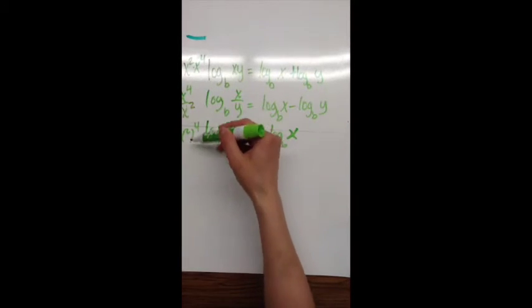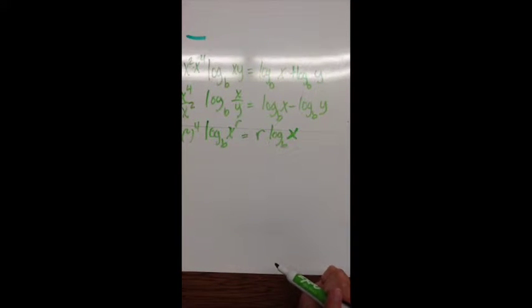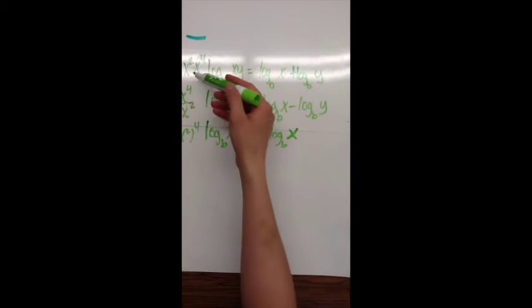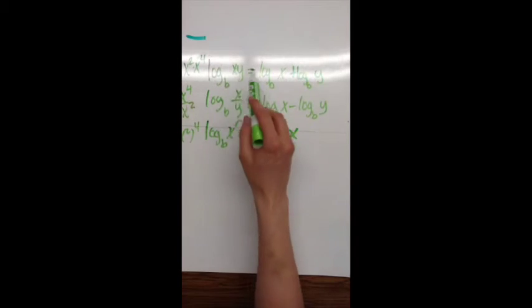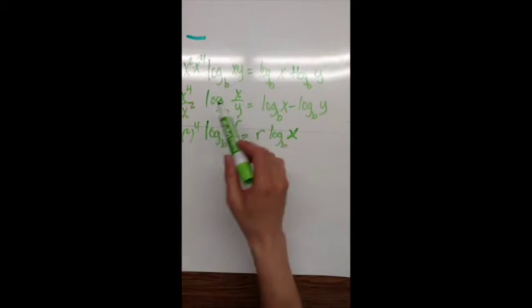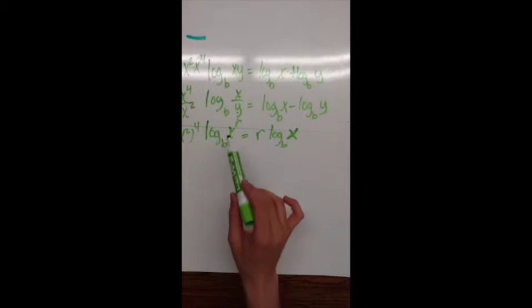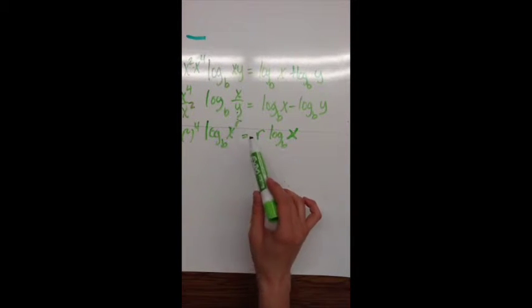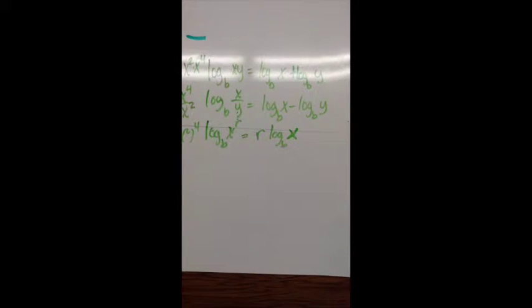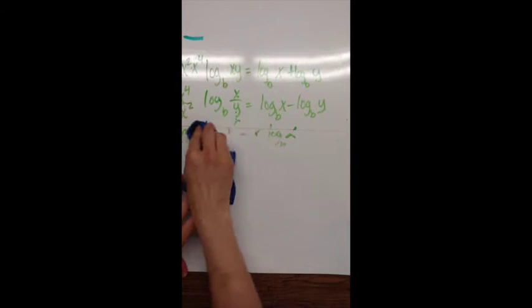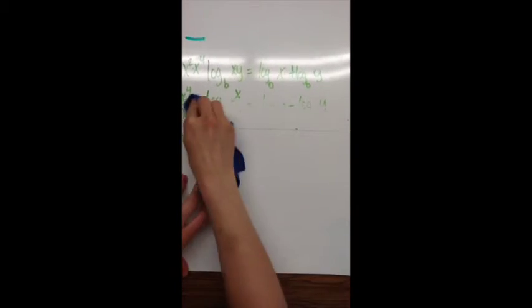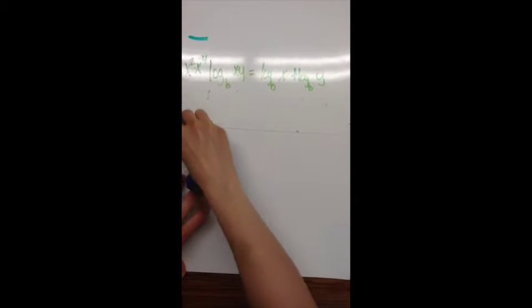This is how I remember the rules for expanding and condensing logs — they go with your exponent rules. If you're multiplying the arguments, you split into two logs and put a plus. If you're dividing the arguments, you split into two logs and put a minus. If you have a power with the argument, it gets multiplied out in front. Condensing means writing it as one log rather than several logs.